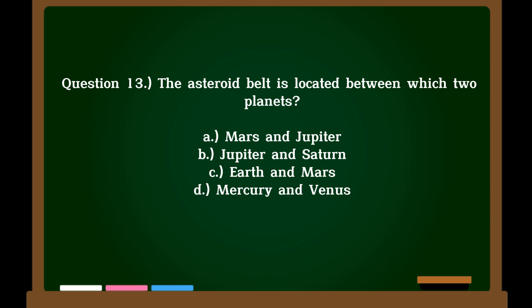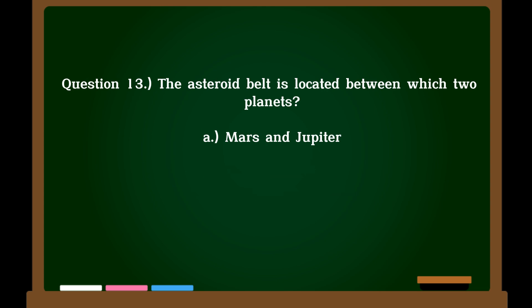Question 13. The asteroid belt is located between which two planets? A. Mars and Jupiter, B. Jupiter and Saturn, C. Earth and Mars, D. Mercury and Venus. Correct answer: A. Mars and Jupiter.